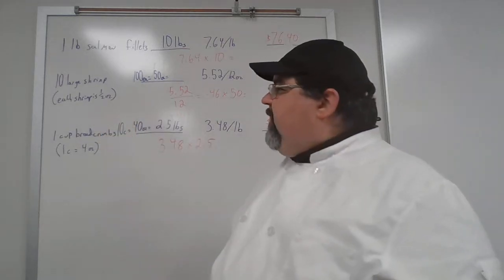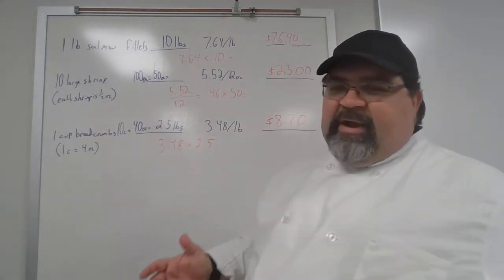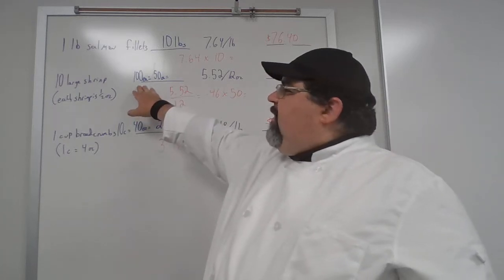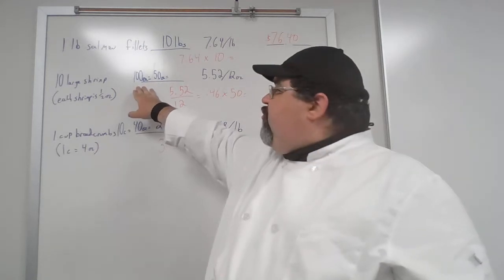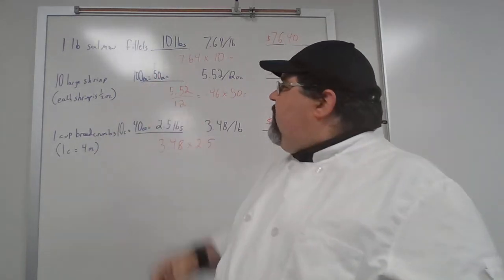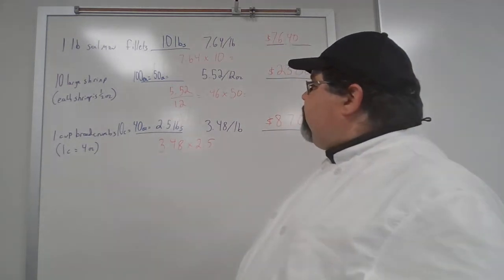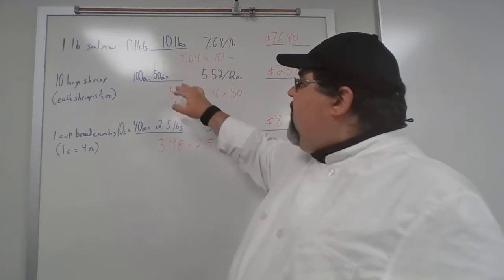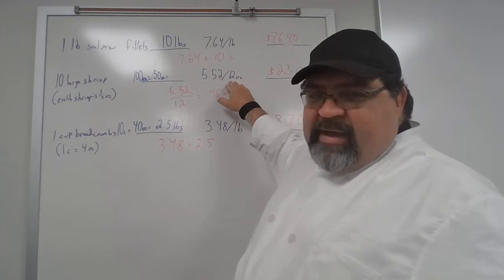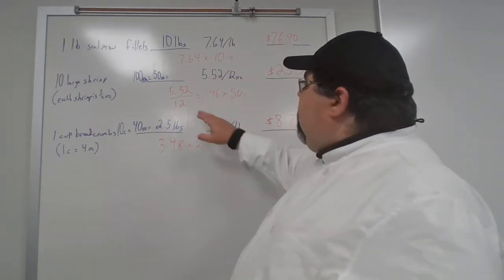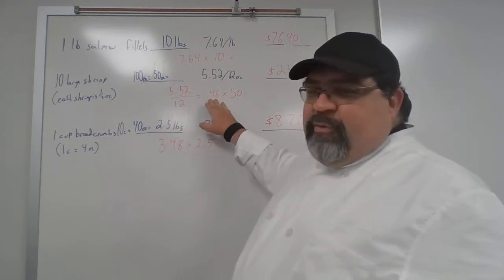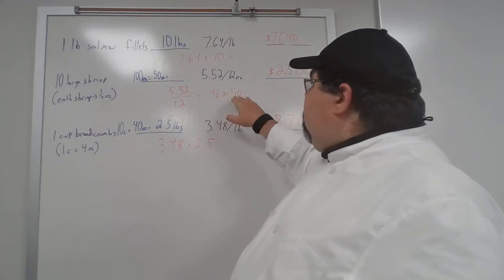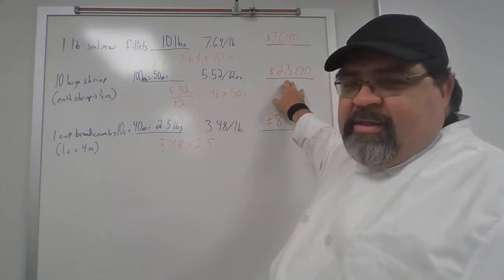The recipe calls for 10 large shrimp. Each shrimp is roughly half an ounce — it will vary according to size, but we'll round it to half an ounce. 10 large shrimp times 10 gives you 100 large shrimp, each half an ounce, so you need 50 ounces of shrimp. On the shopping app, shrimp comes in 12-ounce bags at $5.52 per bag. $5.52 divided by 12 gives $0.46 per ounce, times 50 ounces equals $23.00.